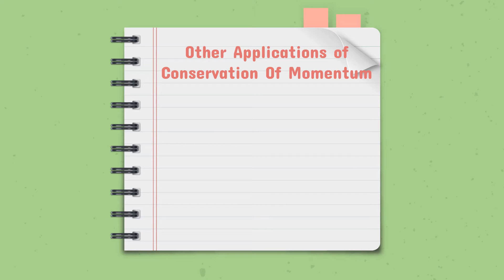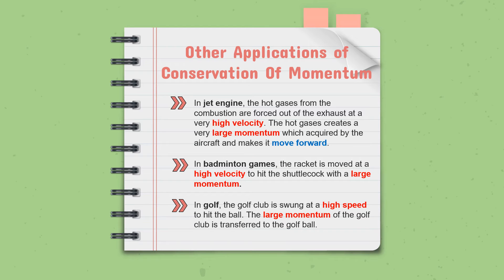There are other applications of conservation of momentum. In a jet engine, hot gases from combustion are forced out of the exhaust at very high velocity. The hot gases create a very large momentum which is acquired by the aircraft, making it move forward — similar to the rocket. In badminton, the racket is moved at high velocity to hit the shuttlecock with a large momentum. In golf, the golf club is swung at high speed to hit the ball, and the large momentum of the golf club is transferred to the golf ball.